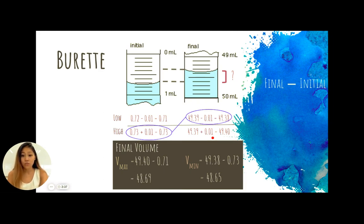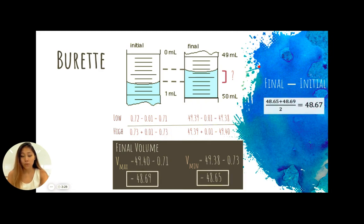So using these two values, then we can calculate the final value that would come out. So the final value would be, in terms of your average, you would want to calculate an average. So the average of 48.69 and 48.65, as we can see here, we add them up and divide it by 2 and it gives us 48.67.